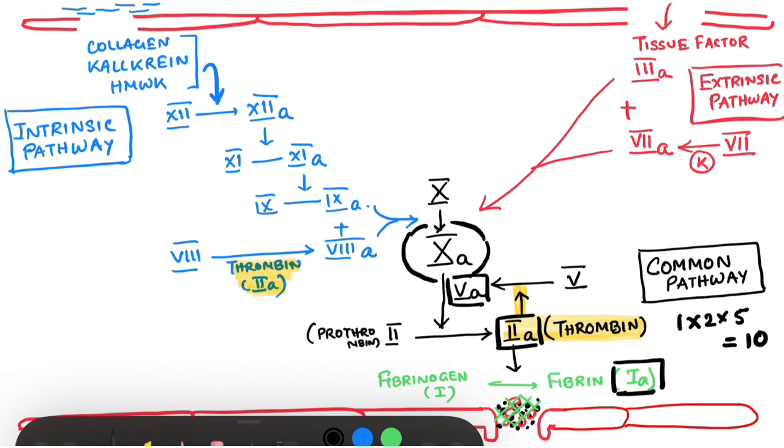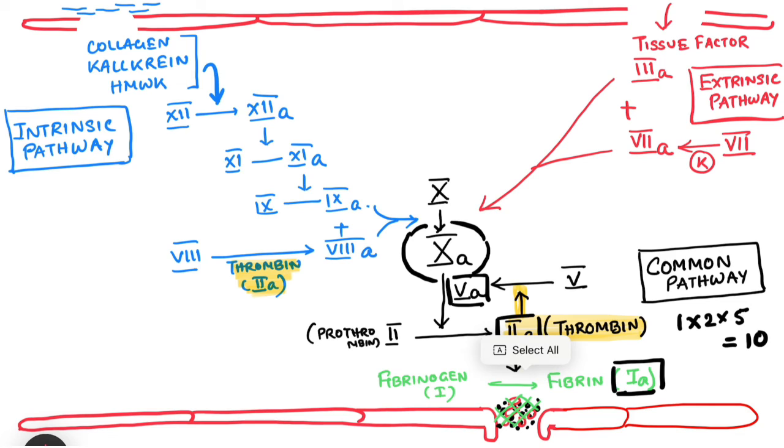Now, we will go to the extrinsic pathway. Extrinsic pathway can again be remembered very easily. We will draw a line till factor 10. And we will write that 3 plus 7 is equal to 10. Activated factor 3 and activated factor 7 together is forming a complex which is activating factor 10 in extrinsic pathway.